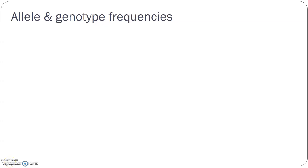Now that we know a little bit about evolution and gene pools, let's talk about what we know statistically about a gene pool. In your lab book, one of the major things you're going to be conquering in this unit is determining what the frequencies are of alleles and genotypes. Remember back in lab 10, we talked about frequencies and probability — we're going to build on that here.